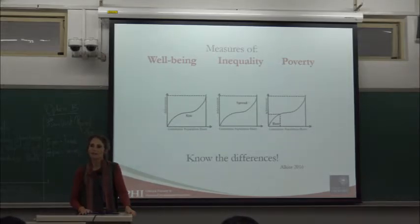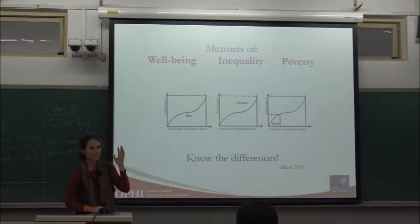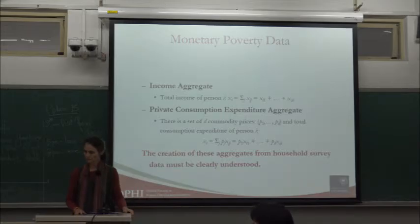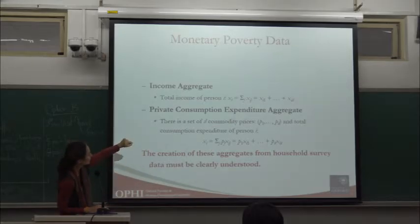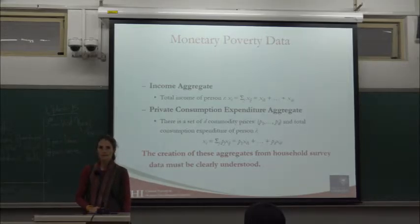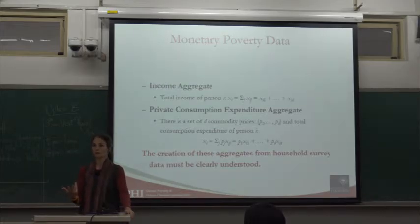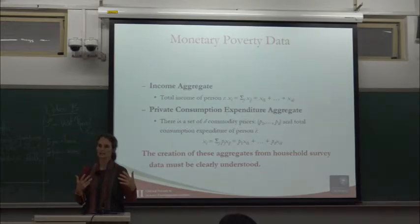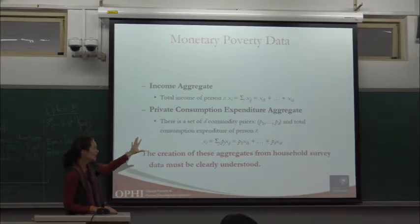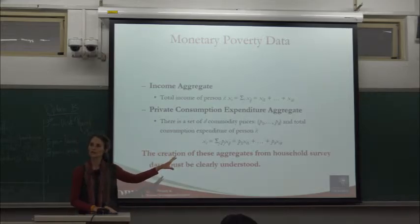In this first section, I'd like to take a few minutes to think about how we create the income or consumption expenditure aggregate. This is a step that if we read books like Foster, Lokshin, and Seth, which focus on the measurement of poverty, we simply start with these aggregates. But because we are doing empirical measurement, we have to understand how we get from household surveys to these aggregates, which are key to unidimensional measures.